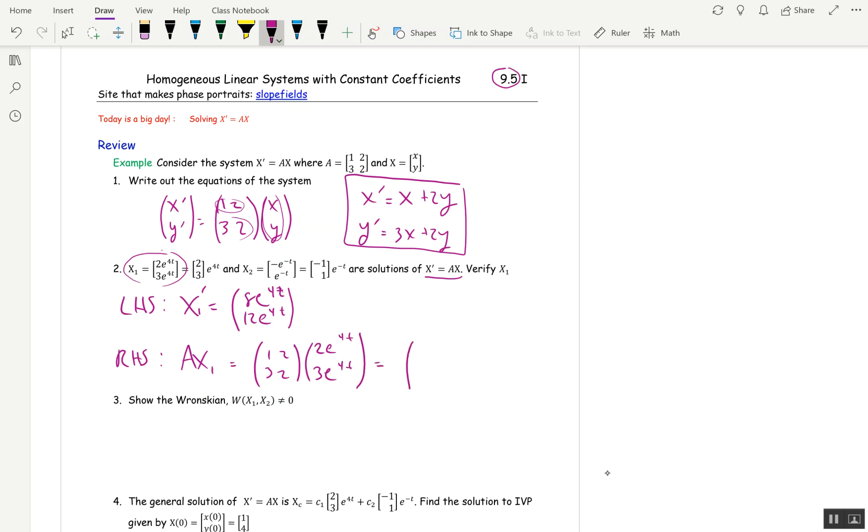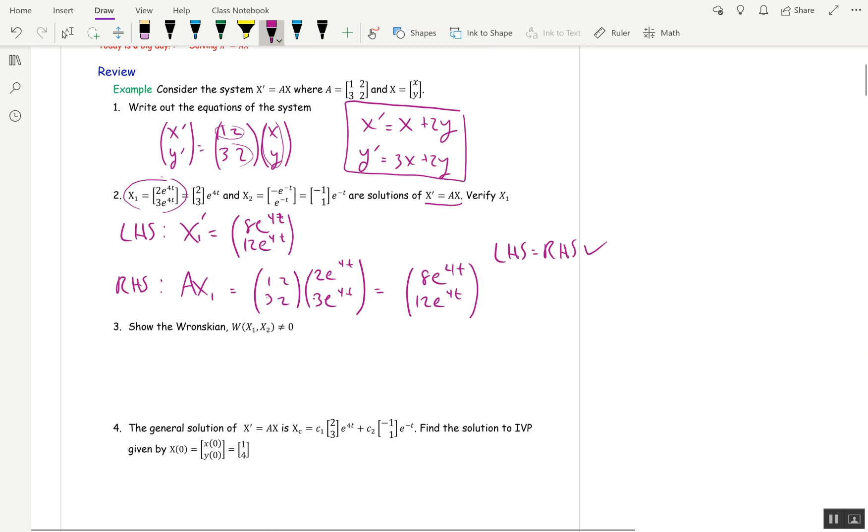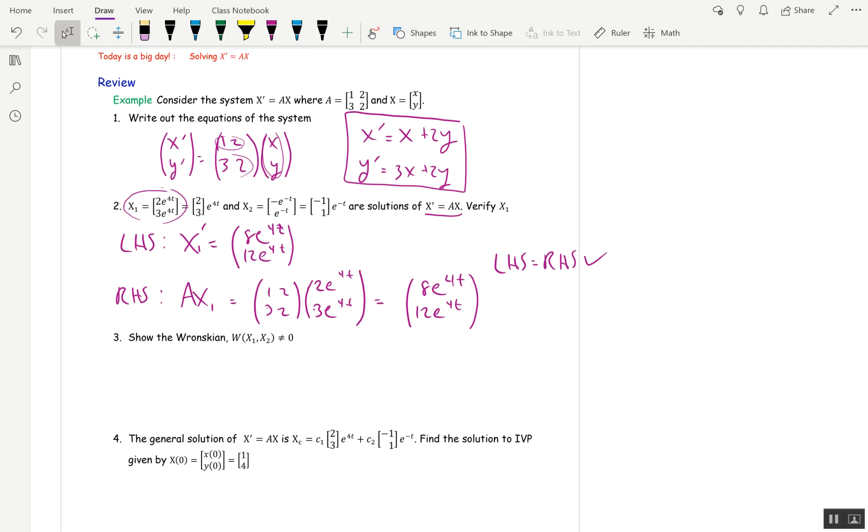That's 2 + 6 = 8e^(4t), and then 6 + 6 = 12e^(4t). So left-hand side equals right-hand side, so X₁ is indeed a solution. X₂ is also a solution, but we're not going to show it because it's enough just to show X₁ is a solution.